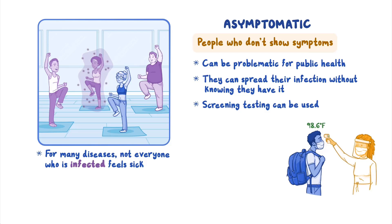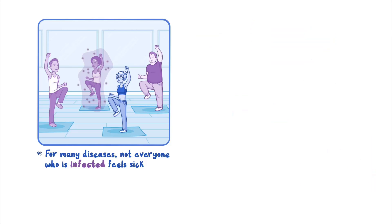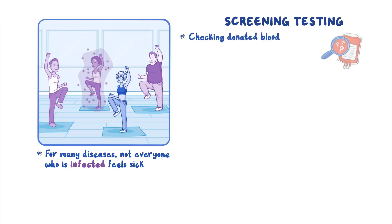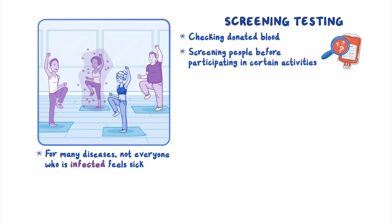The same types of tests used for diagnostic purposes — PCR and antigen tests — can also be used for screening purposes. Examples of screening testing include checking donated blood for infectious agents before it's used, or screening people for an infectious disease before participating in certain activities.